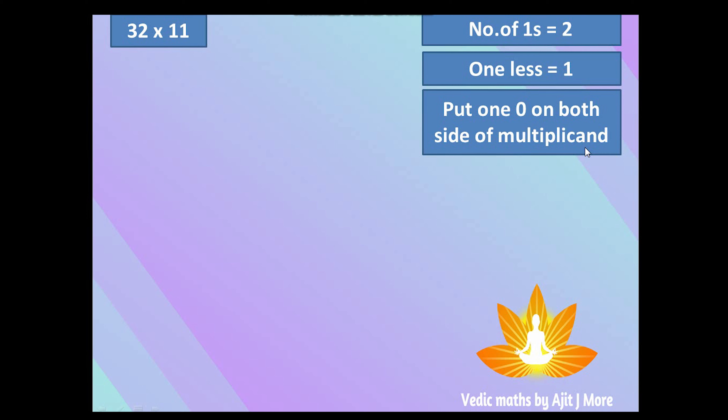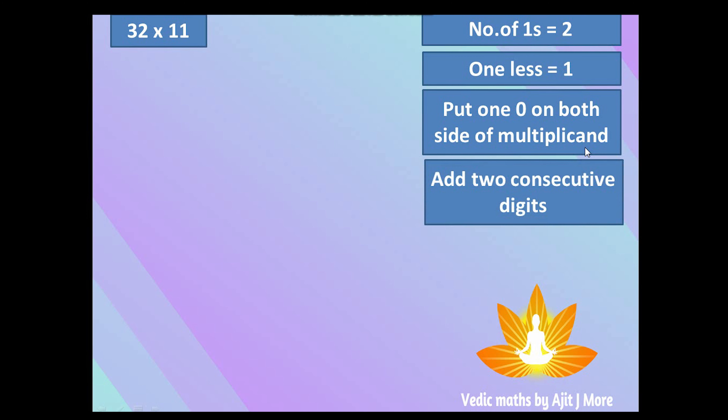After that, go on adding two consecutive digits from the right side moving to the left, and whatever you get is your answer. While adding consecutive digits, if your answer is two digits, keep the units value and carry the tens value. I'll show you examples where carry is also involved.